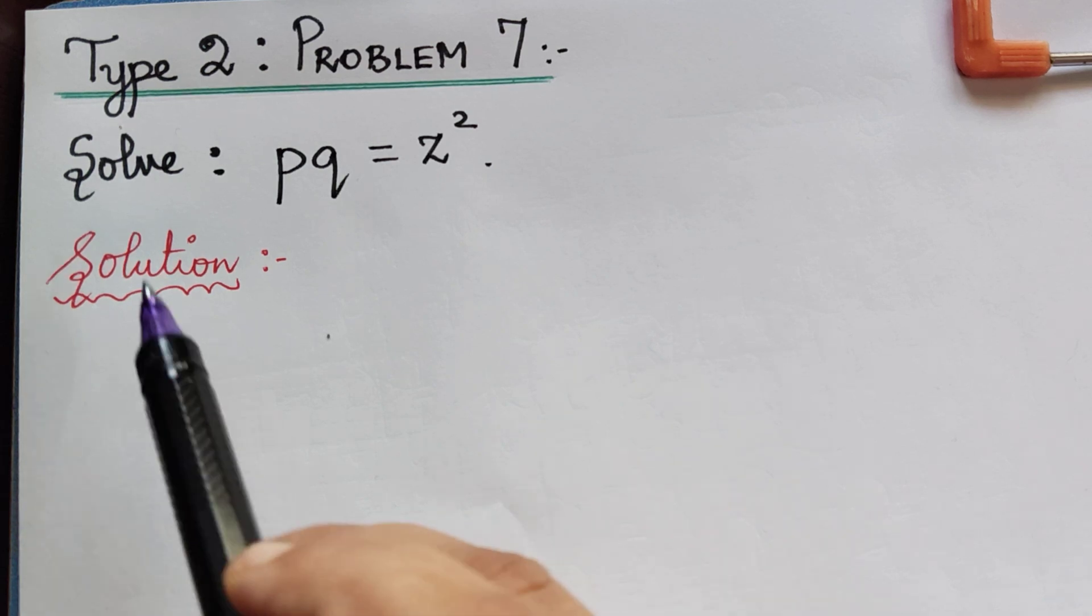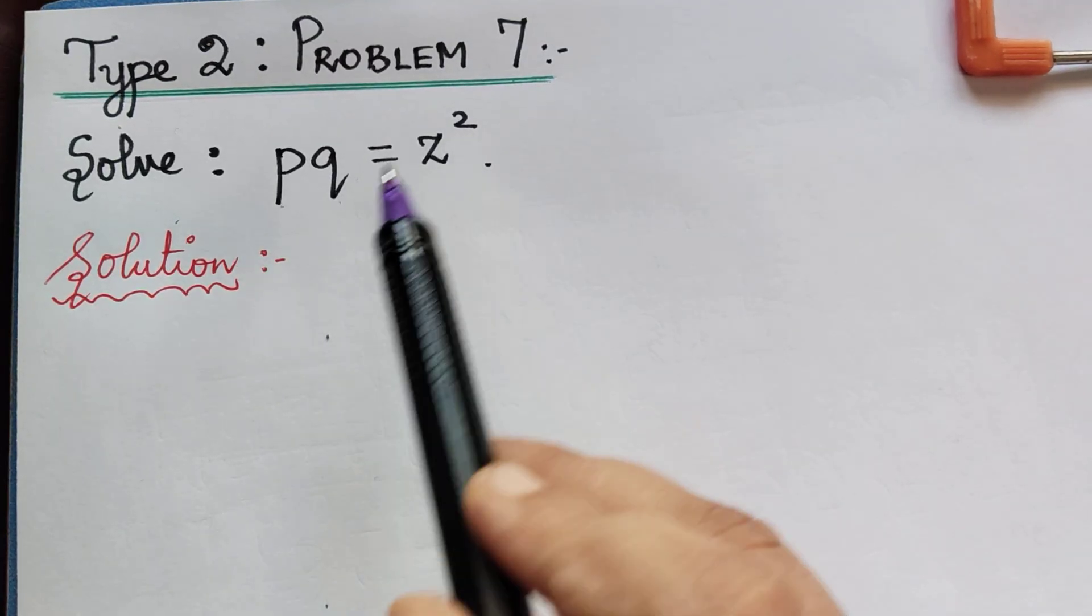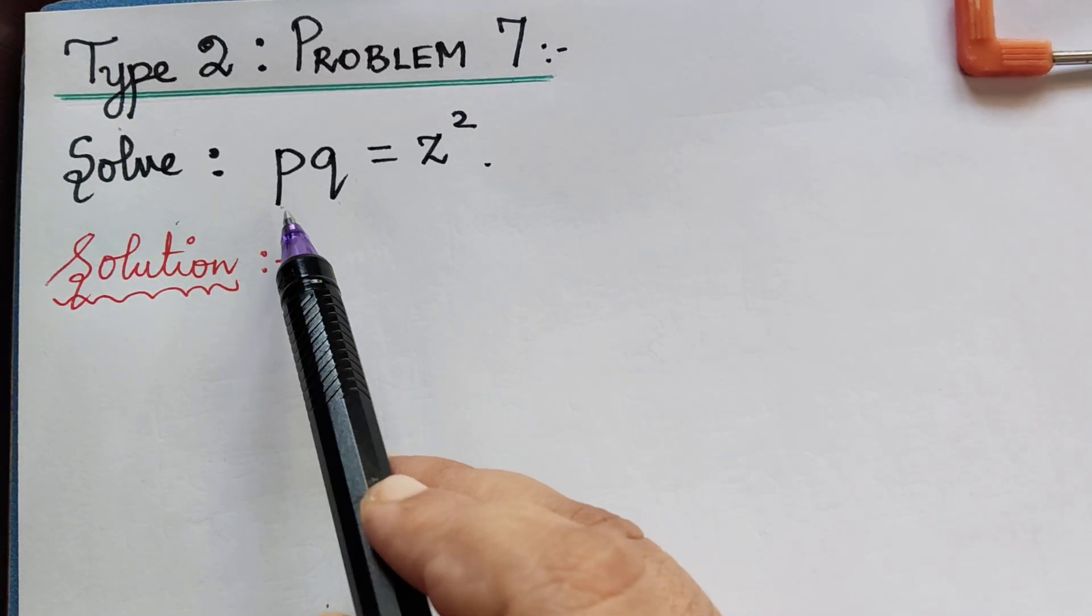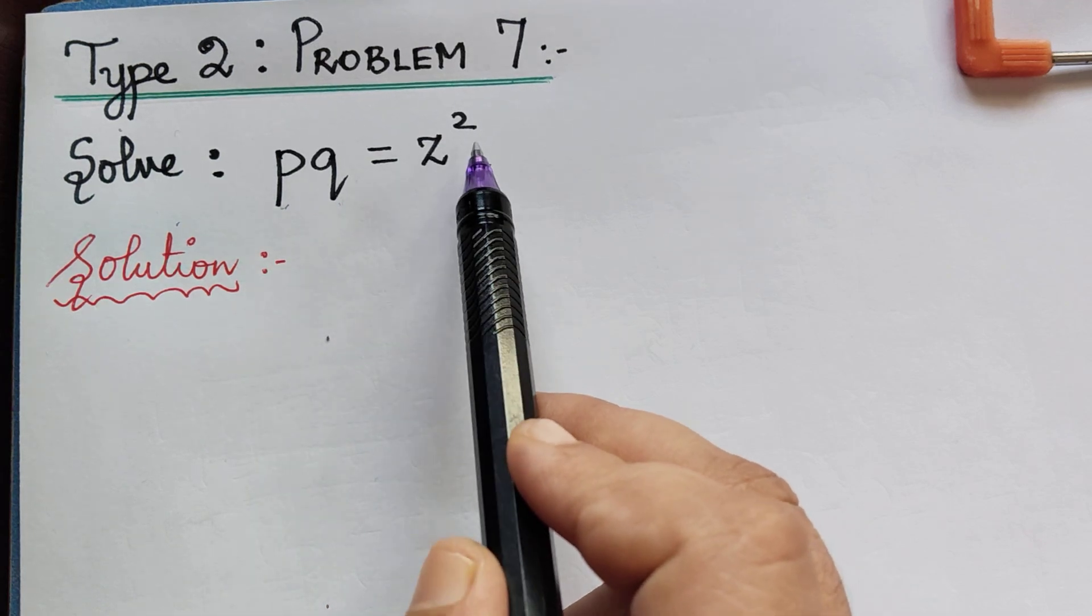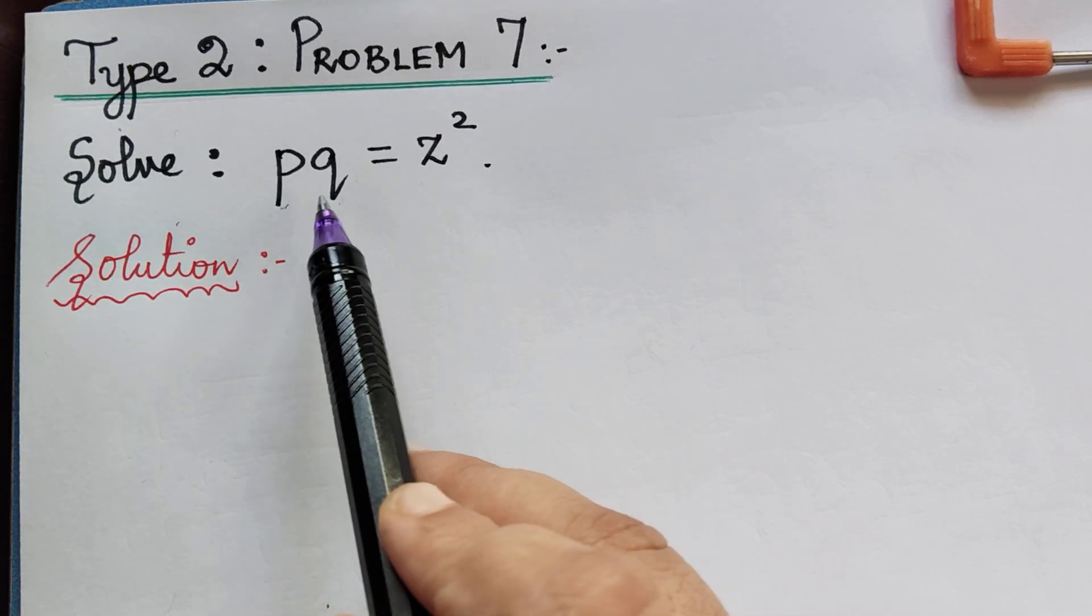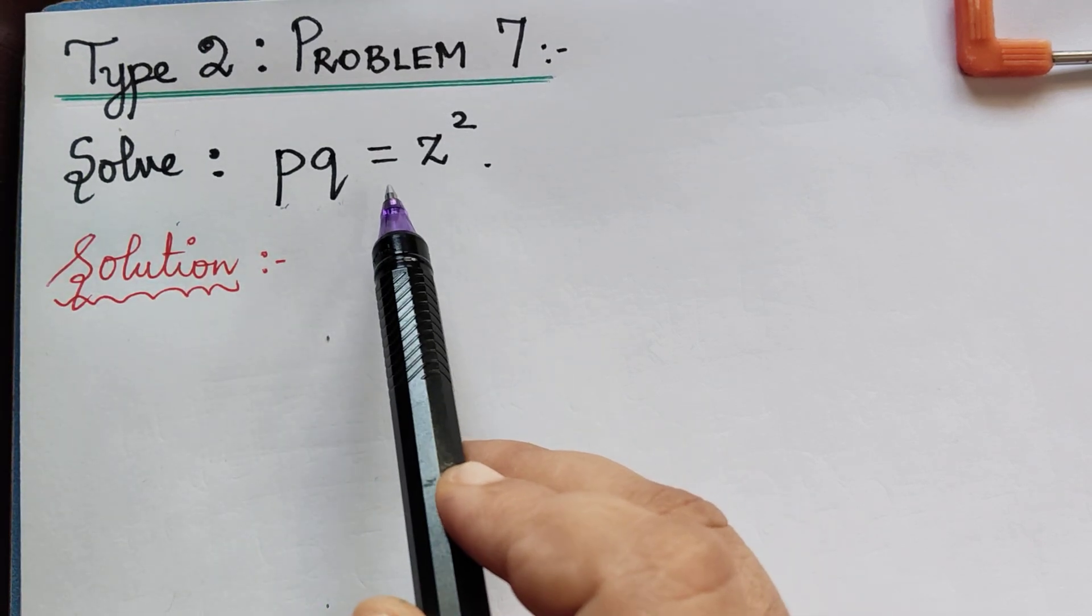Now the question is: solve PQ = Z². We observe that only P, Q, and Z are present explicitly. In this case, the given equation is of the form